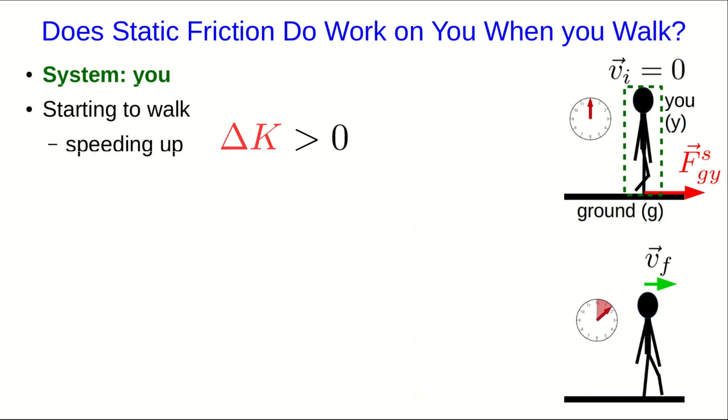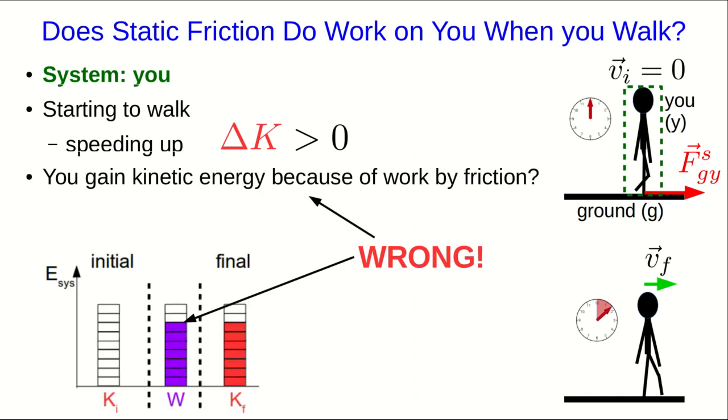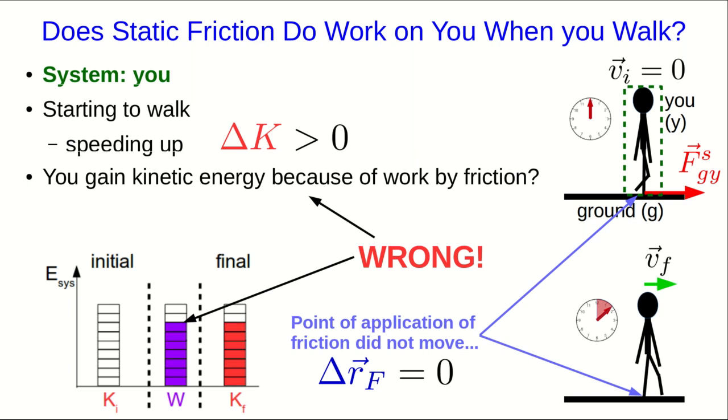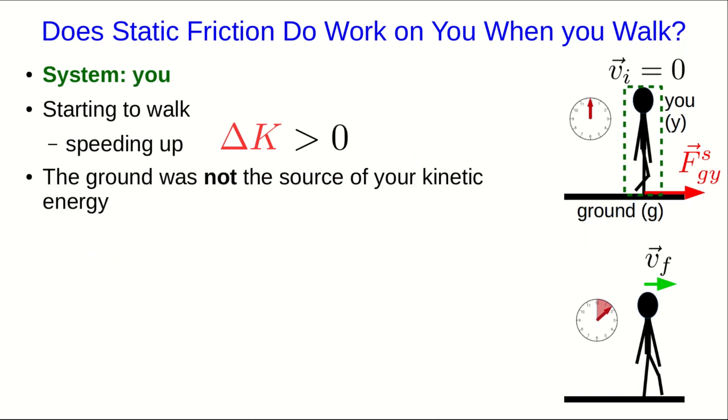I'm going to do some very subtle foreshadowing here. My subtle foreshadowing is that I'm going to tell you something, and it's going to turn out to be wrong. So I'm going to tell you that you gain kinetic energy because of work by friction. But if you think about it carefully, you'll see that that has to be wrong. Think about the point of application of the force, your foot. Your foot doesn't move, and so the force displacement vector is zero, which means that static friction force is not doing any work.